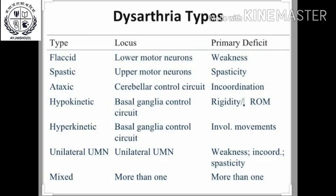The types of dysarthria are: flaccid, spastic, ataxic, hypokinetic, hyperkinetic, unilateral upper motor neuron, and mixed.